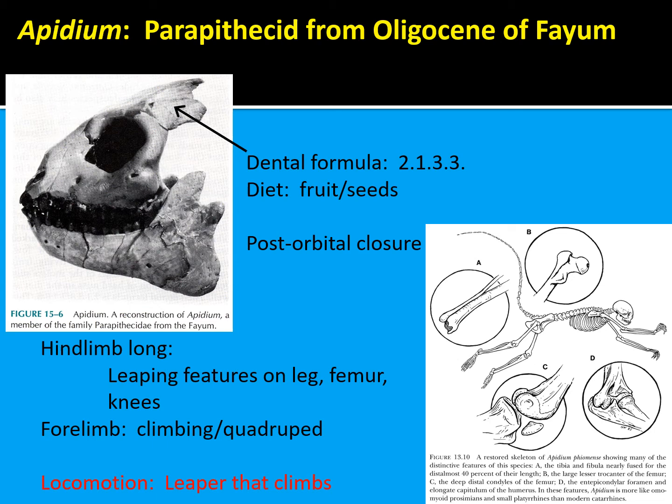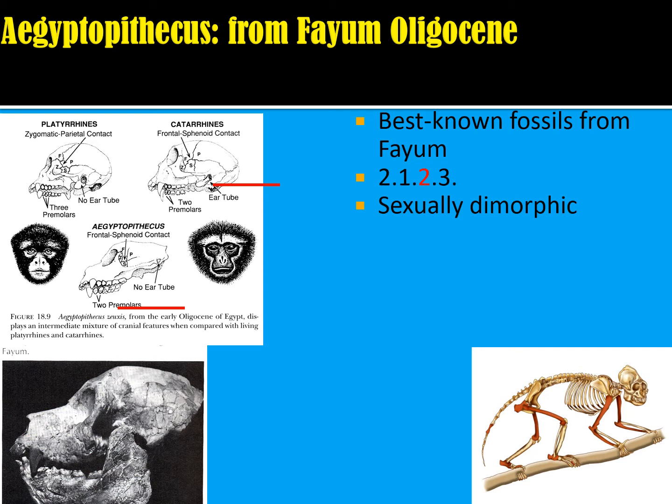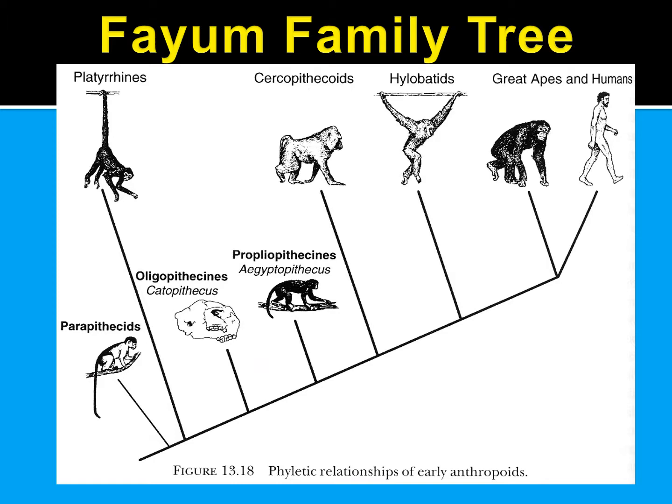Aegyptopithecus is one of the best-known fossils from Fayum. It has a 2-1-2-3 dental formula, was one of the first to display sexual dimorphism in body size, was frugivorous based on its teeth, was diurnal, and was an arboreal quadruped. The Fayum family tree shows the phyletic relationships of how these species are related to each other and how they trace traits back in time.